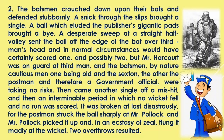Then came another single off a message, and then an interminable period in which no wicket fell and no run was scored. It was broken at last, disastrously, for the postman struck the ball sharply at Mr. Pollock, and Mr. Pollock picked it up and in an ecstasy of zeal flung it madly at the wicket — two overthrows resulted. Here we can see how the batsmen are scoring runs. The postman is a government officer, so he is a man taking no risks.